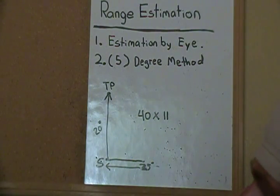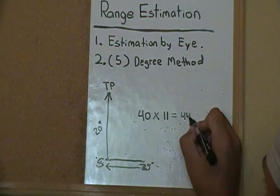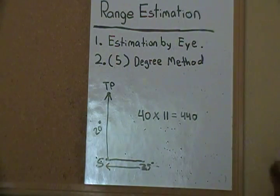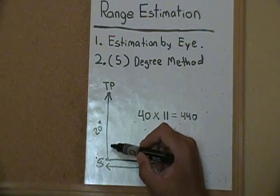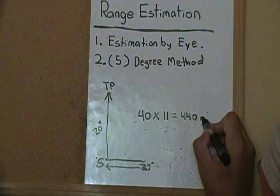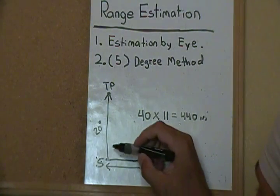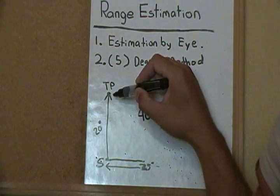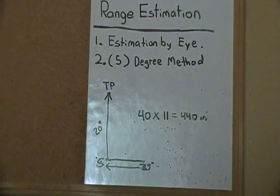It's quite simple. What's the answer? 440. So what you just did was you got an approximation. And I call it approximation because there's too many factors. Am I tall, am I short, am I obese, am I skinny, do I have a disability? It's going to be a different number, but you're going to be close. So the distance between your start point and your target point is roughly 440 meters. That's range estimation using the five degree method.